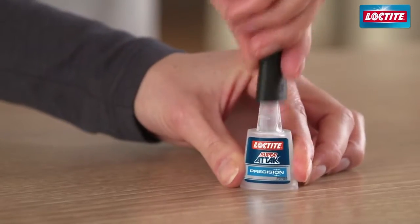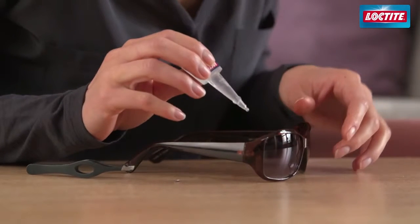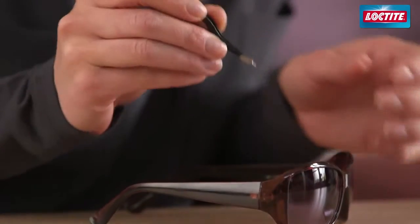Apply one drop of glue to the inside of the hinge by gently squeezing the sides of the bottle. For precision jobs like this, make sure you use a precision bottle which delivers just one drop when and where it's needed.